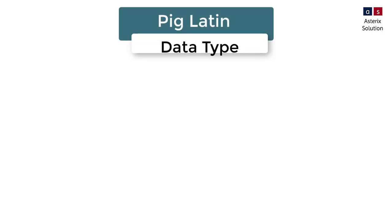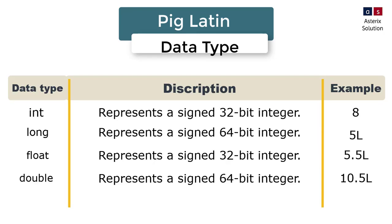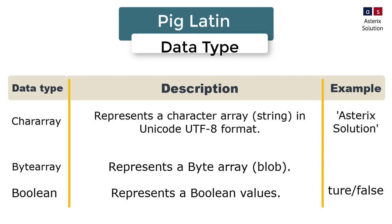Whatever we write will be given in a data type. Pig contains basic data types like int, long, float, double. Here we don't say string, we say char array, which is basically a string format. Then you have a byte array. The byte array is your BLOB file, BLOB-like file.